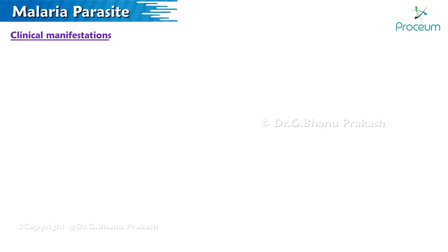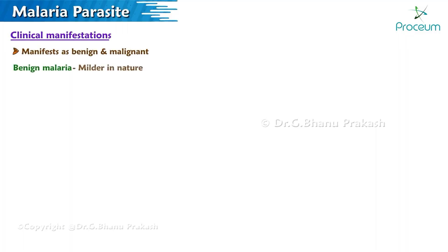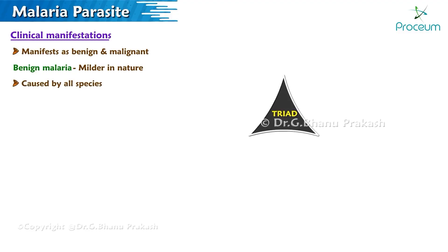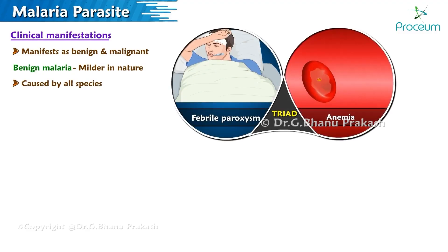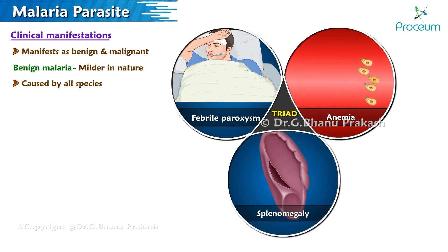Clinical manifestation: clinically, malaria manifests as benign and malignant. Benign malaria is milder in nature and can be caused by all species. It has a characteristic triad of febrile paroxysm, anemia, and splenomegaly.